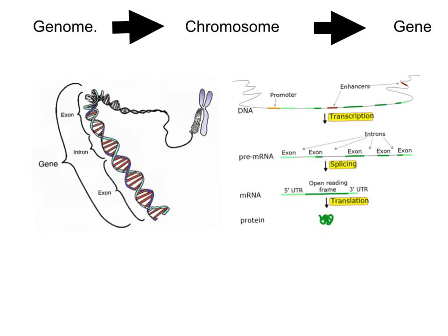The genome is the complete set of the organism's DNA or chromosomes — every single bit of the DNA. A chromosome is just a portion of the DNA, a chunk of it. So as we work our way down this line, we're getting smaller and smaller.